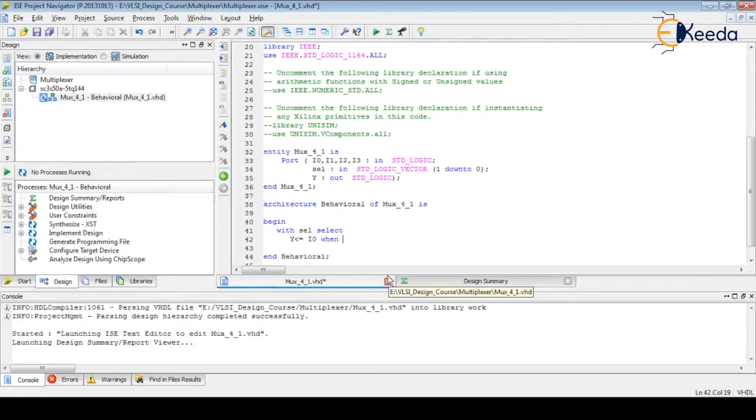Y is equal to i0 when select line is equal to 0. So let us write it. The syntax says i0 when, so here we are not going to write like in when else. Here directly we have to write its choice. Select is equal to when it is 00, and here we have to give a comma.